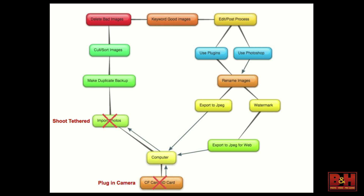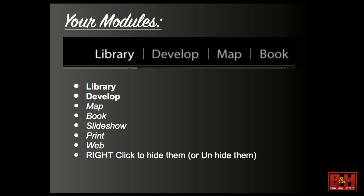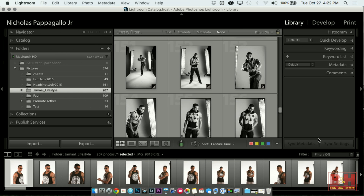Edit and post process. Look at how much happens before I even start editing, and most of that is automatic. At that point when I'm editing, I will move out of editing into more editing on plugins or in Photoshop if I need to, and then I'll rename my images at that point. The two I am in constantly is Library and Develop. I hide the rest of them by right-clicking.